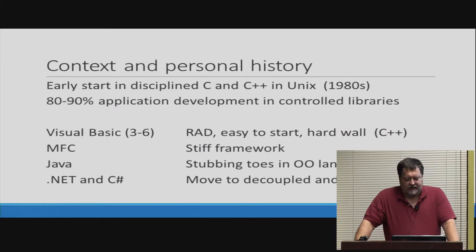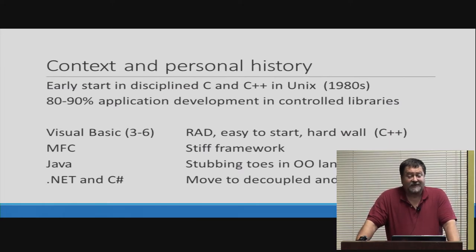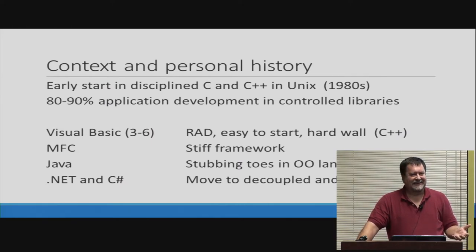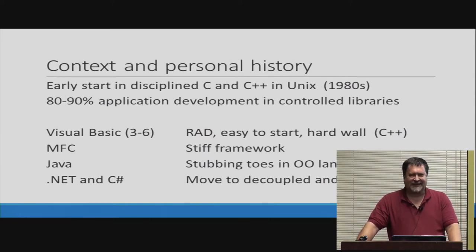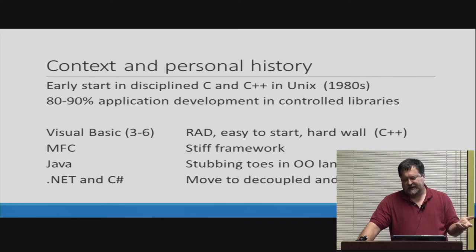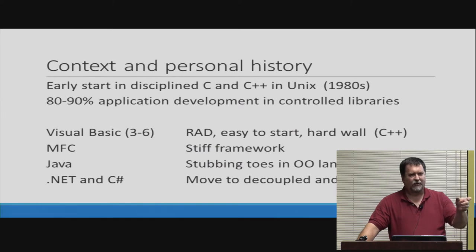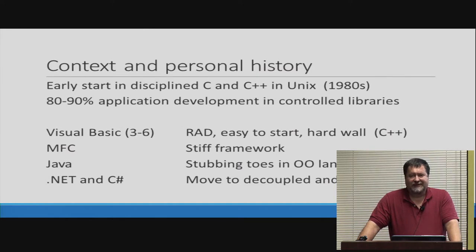Some context and personal history. In the 1980s I had an early start in very disciplined C and C++. I was in Cambridge, Massachusetts — a wonderful place to be — surrounded by other goofy guys all trying to be the uber geek. But they paid us, and that was great. At the time, 80 to 90% of application development had to be done in controlled libraries. We used naming habits and had very good discipline. This was before objects, but we were really in object-oriented form without the tools.